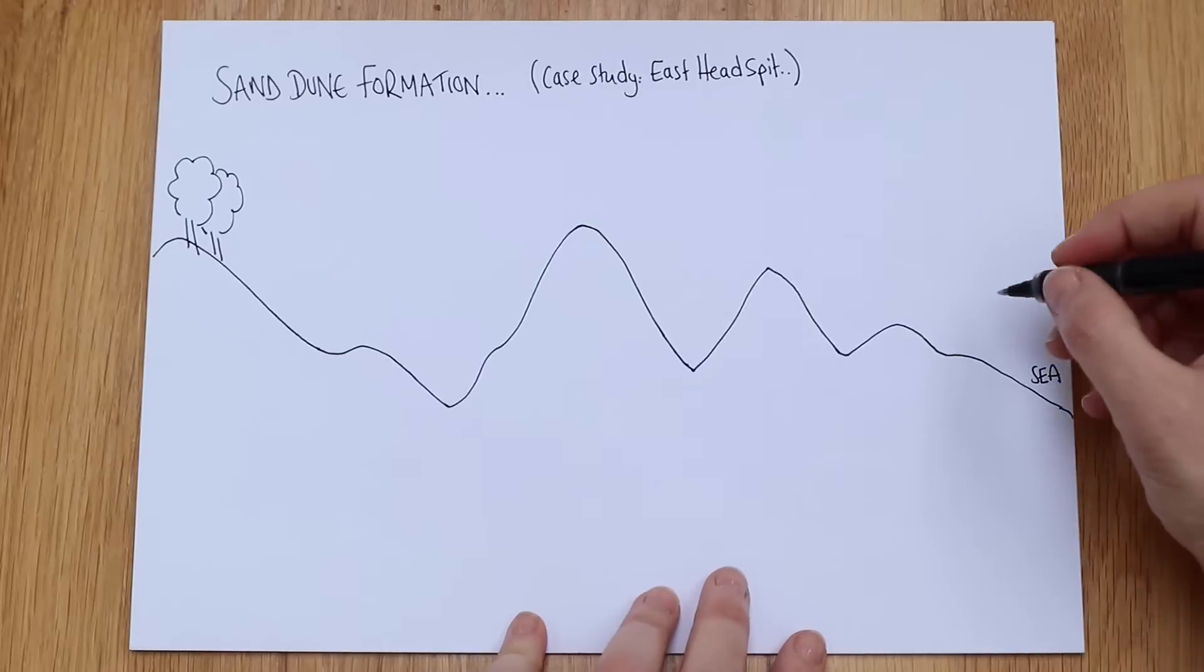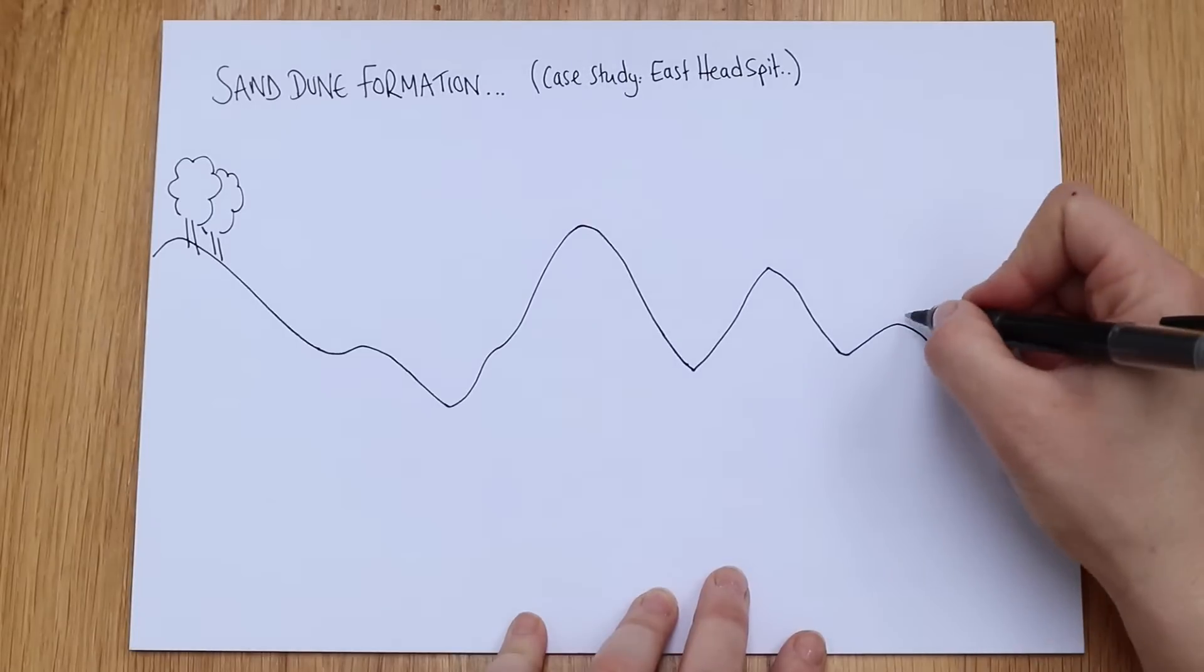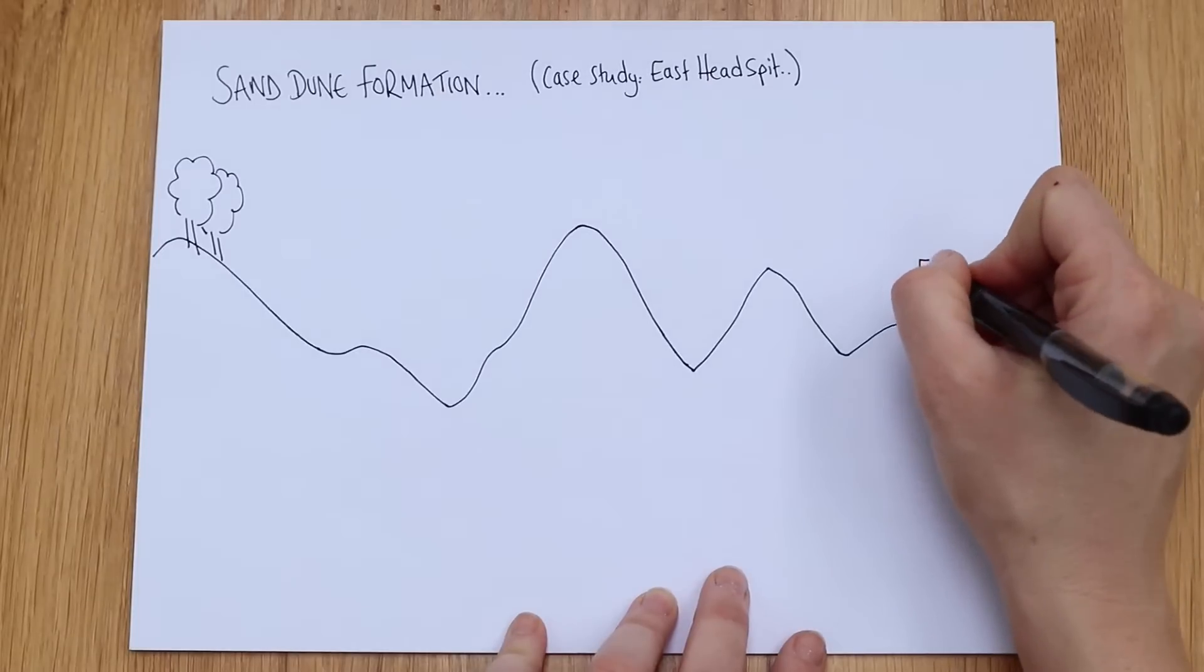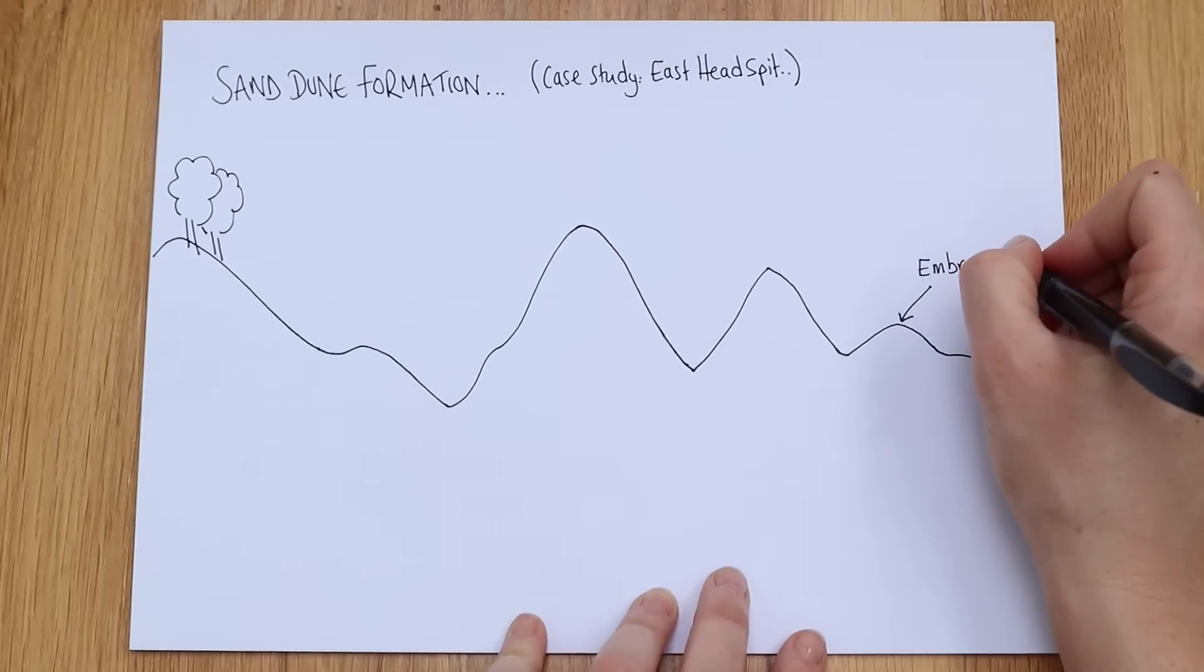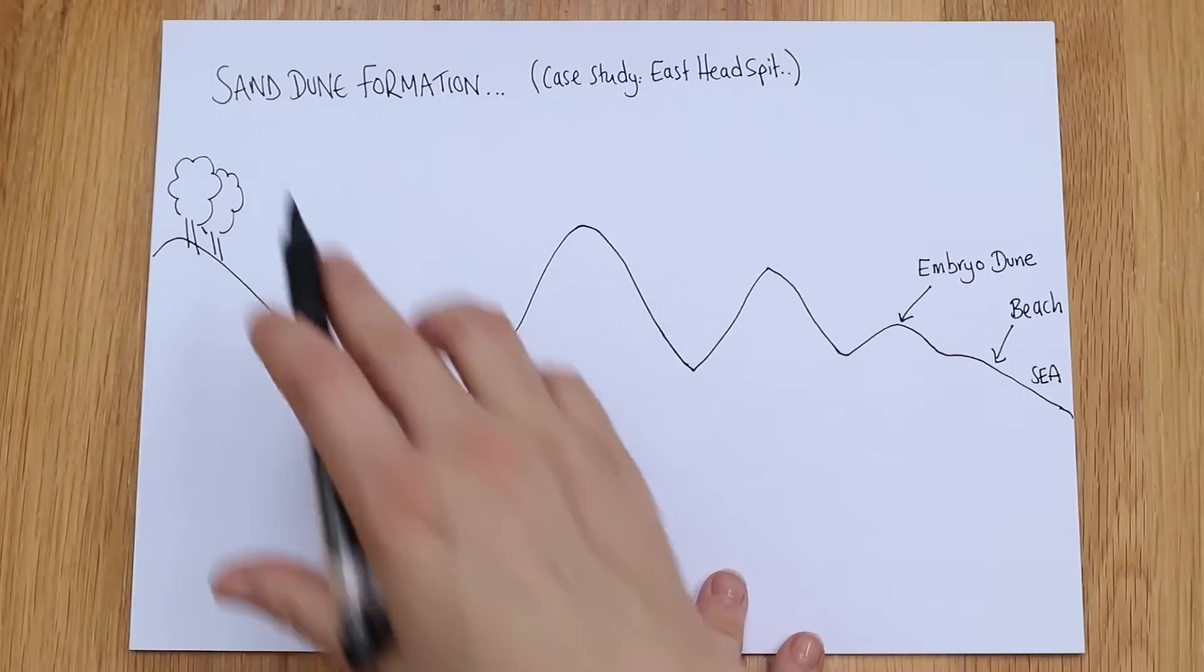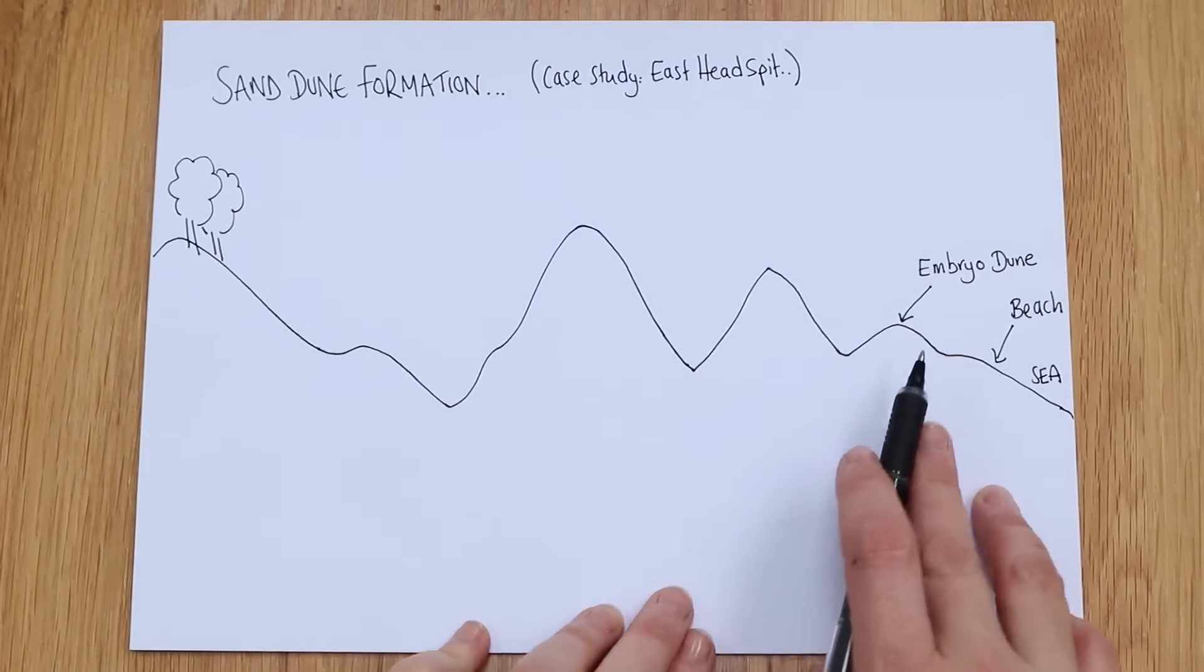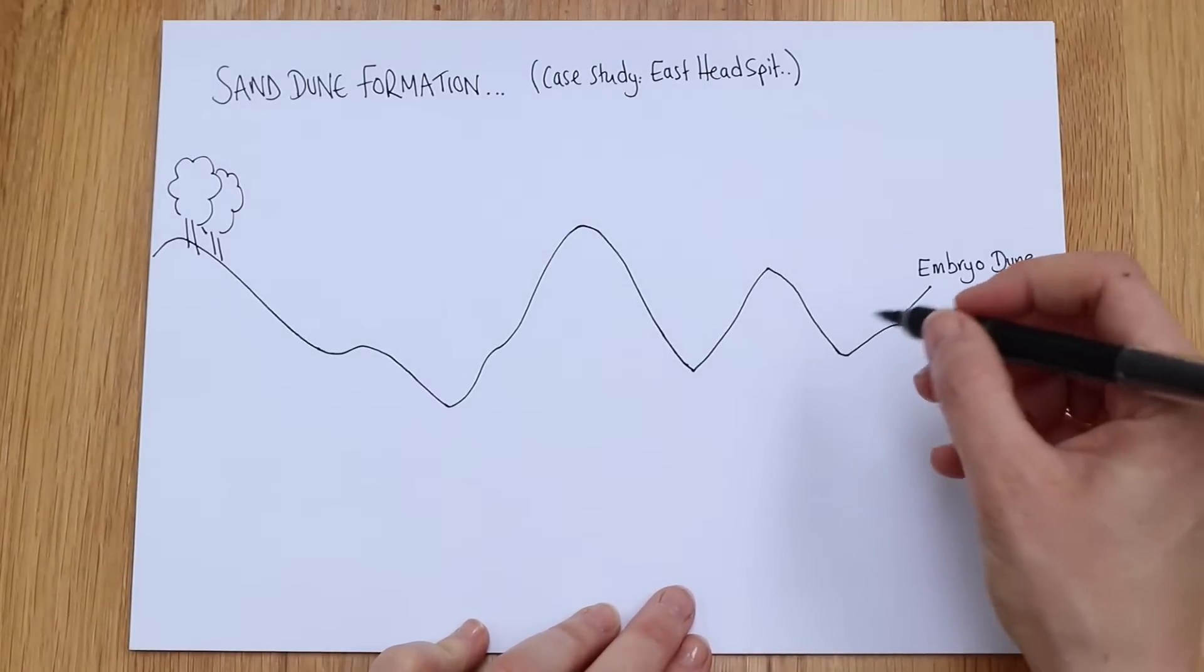Okay, and then if you imagine that you know this is the beach, this little hump here, this is our what we call an embryo dune. Obviously embryo is the word we use to describe a baby when it's in its early stages of development, and it's very much the same for how a sand dune is formed. They start very small.